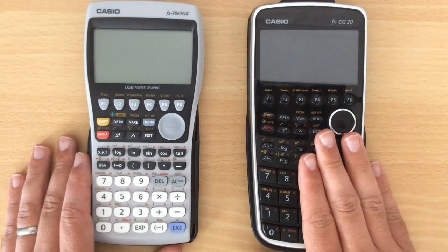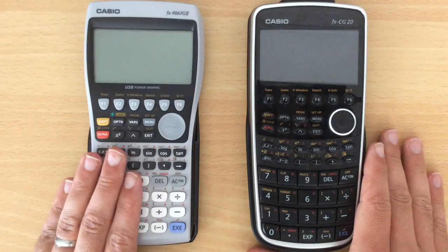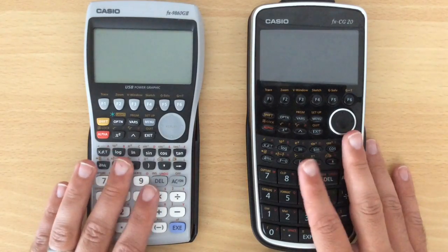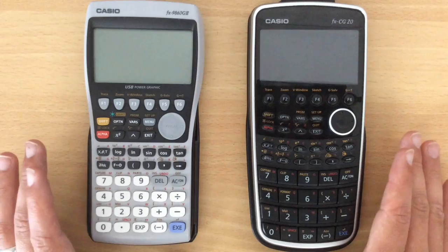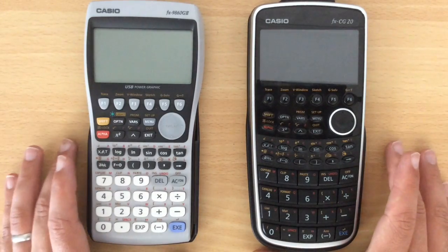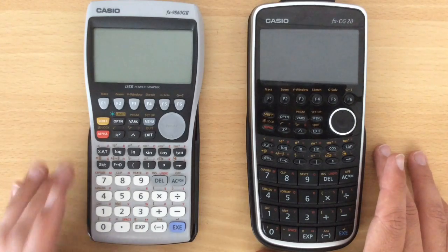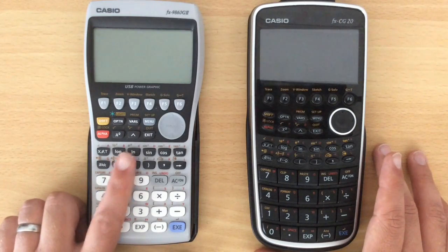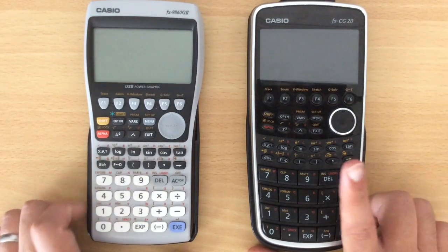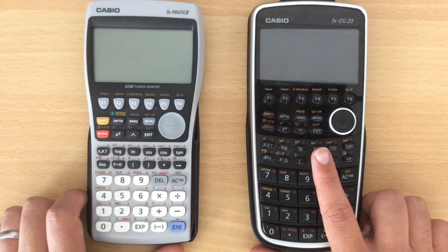The CG20 is the newer model, the 9860 is the older one, and there is a significant difference in price. Currently on Amazon UK in August 2017, this is priced at £79.26, this one is priced at £112.99.